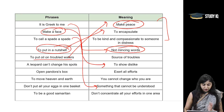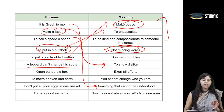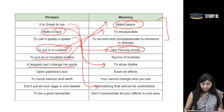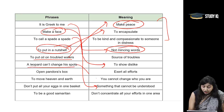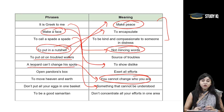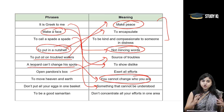'A leopard can't change his spots' — iska arth hota hai: jaisa aapka vyaktitw hai, jaisa aapka nature hai, aap usse kabhi badal nahi sakte. That means you cannot change who you are — aap jaisa hain, aap vahi rahenge. 'Open a Pandora's box' — when you are opening or inviting trouble. Source of trouble — Pandora's box was a source of troubles.